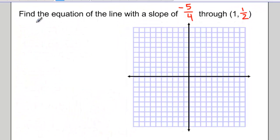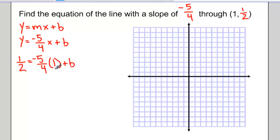And our last example. Find the equation of the line with a slope of negative 5 quarters through the point 1 and 1 half. Again, I start with y equals mx plus b. My slope is negative 5 quarters, so I sub that in for m. I then sub in the point. 1 half equals negative 5 quarters times 1 plus b.